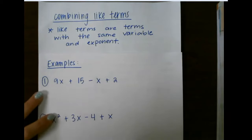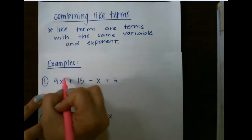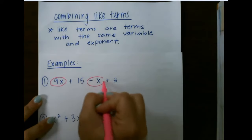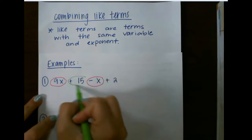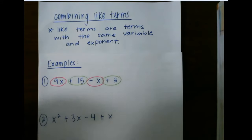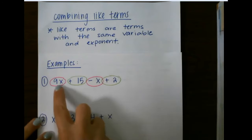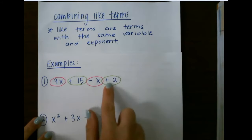Let's look at our first example. I first want to label my like terms: 9x and x, and 15 and 2. Notice that I circled the symbol in front of each term as well.